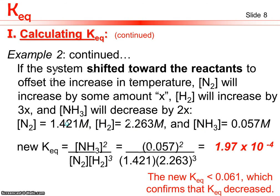We can plug in hypothetical numbers to prove this. If equilibrium shifts toward reactants, N2 increases by x, H2 increases by 3x, and NH3 decreases by 2x, reflecting the 1:3:2 mole ratio. N2 increases to 1.421, H2 to 2.263, and NH3 decreases to 0.057. Plugging in these new numbers gives a new KEQ of 1.97 × 10⁻⁴, which is far smaller than 0.061, confirming that KEQ decreases.